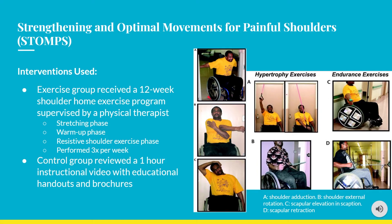The stretching phase consisted of anterior and posterior capsule stretches and upper trapezius stretches. The warm-up and resistive phases consisted of shoulder adduction, shoulder external rotation, scapular elevation in scaption, and scapular retraction. The warm-up phase was performed without resistance. In the resistive phase, shoulder adduction and external rotation were set at the 8-rep max for muscle hypertrophy, while scapular elevation and retraction were set at the 15-rep max for muscular endurance. This program was followed three times per week for 12 weeks. The control group received a one-hour instructional video with educational handouts, essentially a sham treatment.